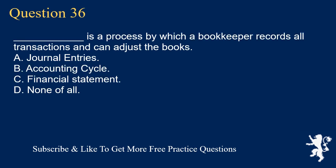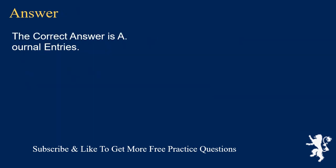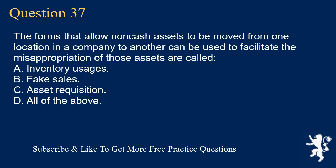Question 36: Underscore is a process by which a bookkeeper records all transactions and can adjust the books. A. Journal entries. B. Accounting cycle. C. Financial statement. D. None of all. The correct answer is A. Journal entries.